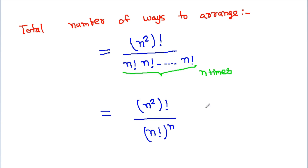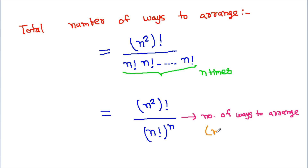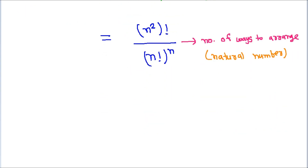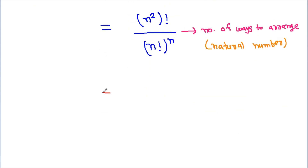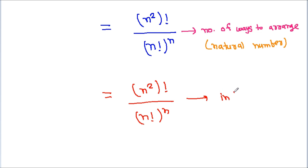It is the number of ways to arrange n square objects, so it should be a natural number. Thus, we can say that n square factorial by n factorial to the power n is an integer.